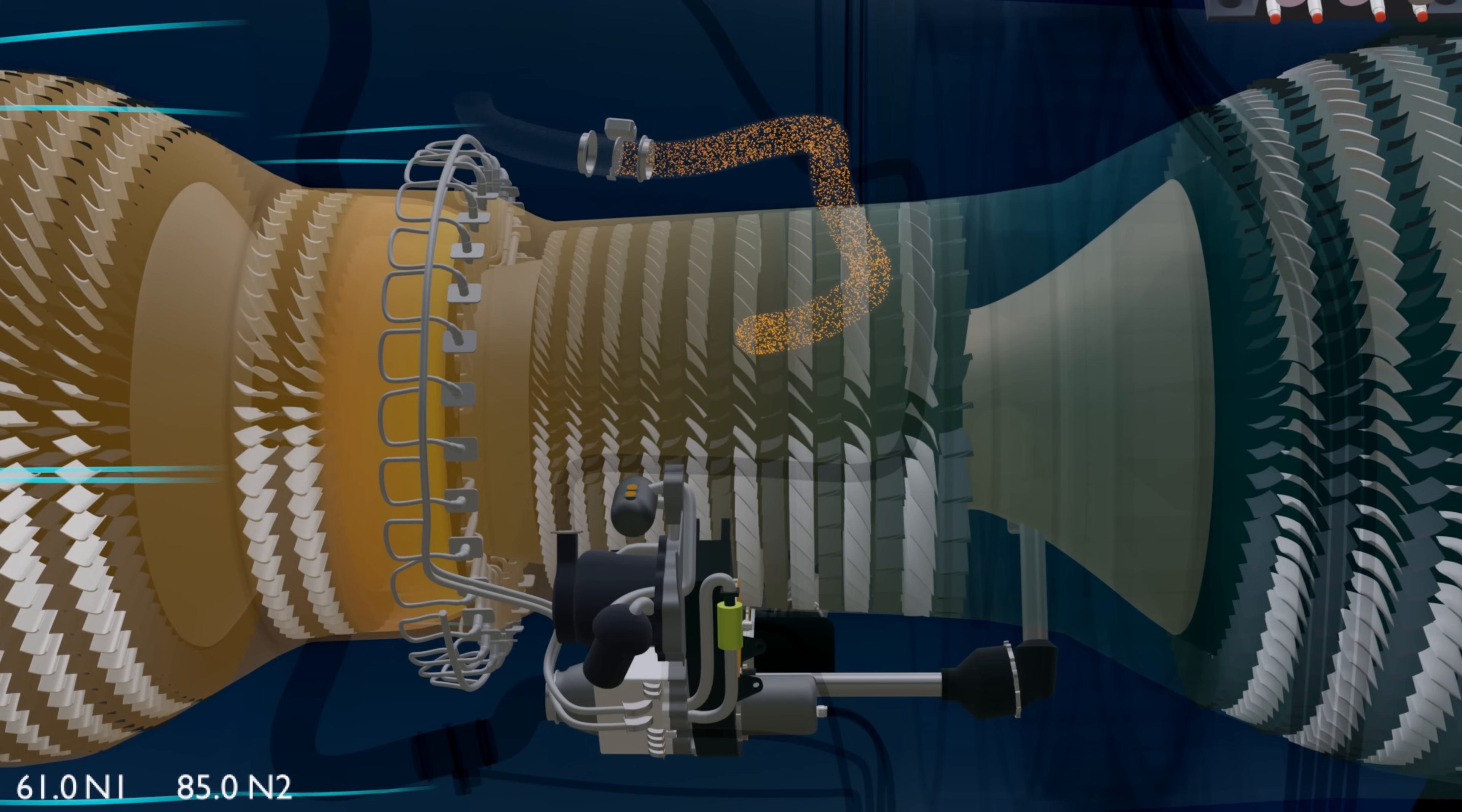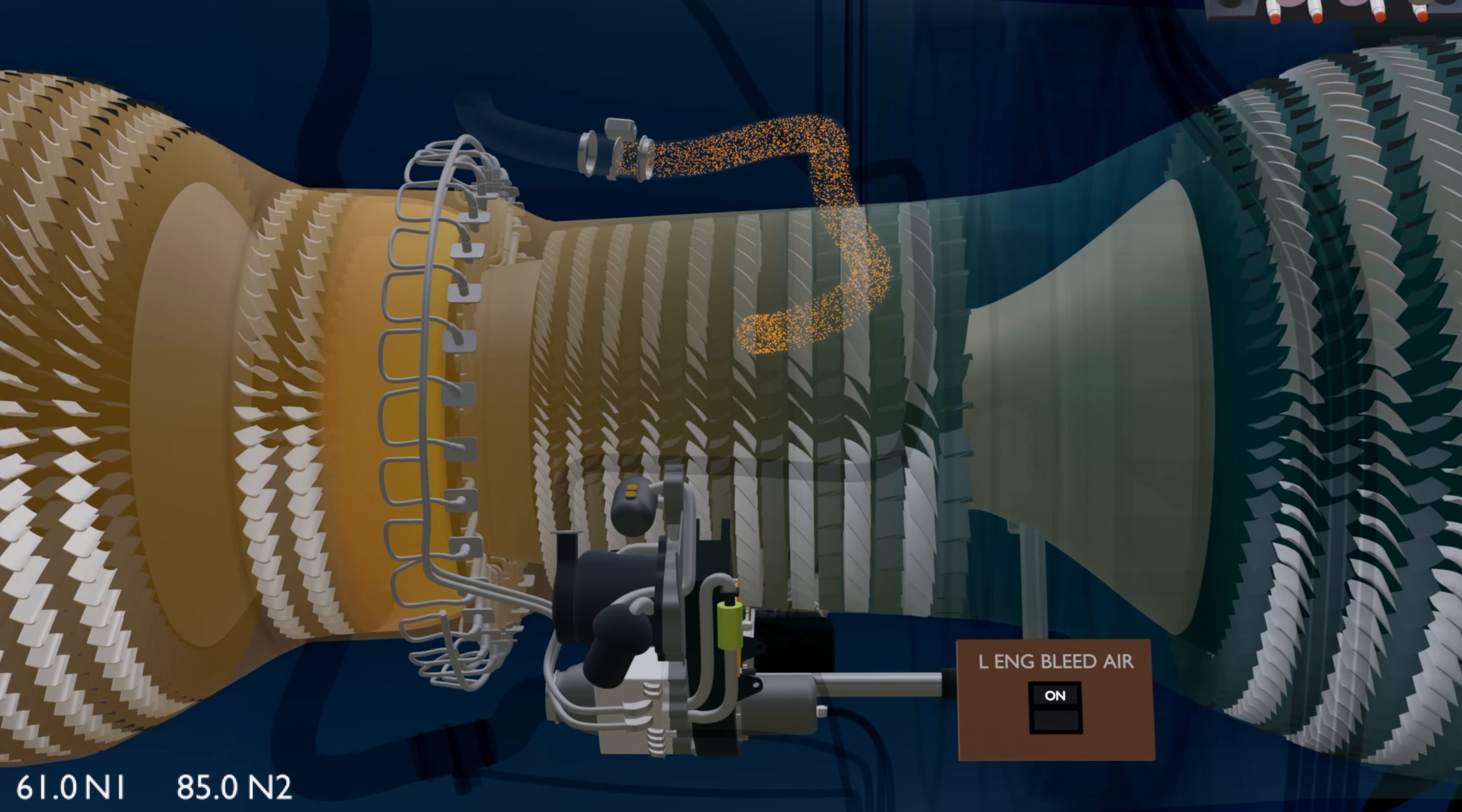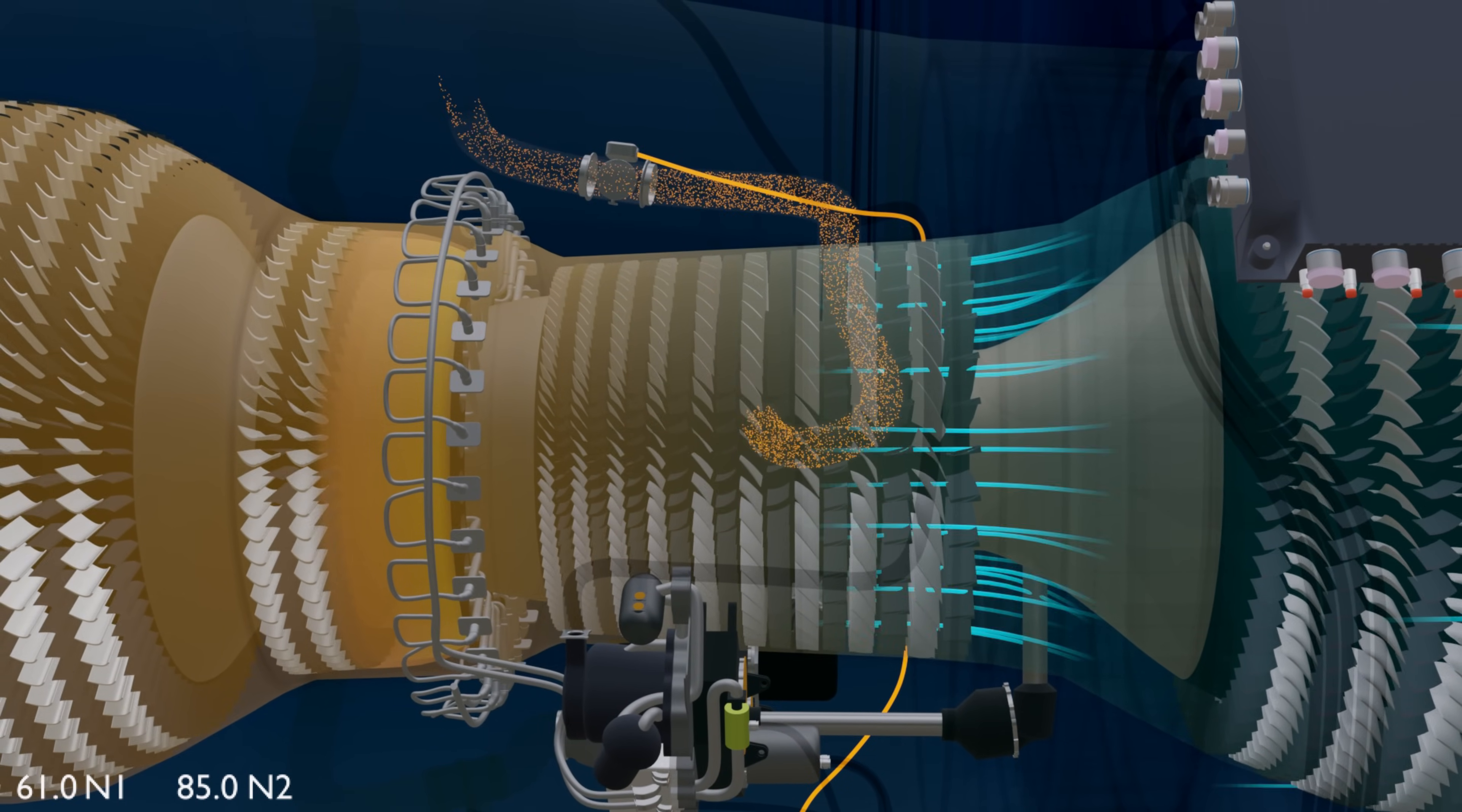Just like electrical and hydraulic switches, the engine bleed switch is always kept on for automatic operation. The controller opens the valve and the bleed air is sent to the aircraft distribution ducts.